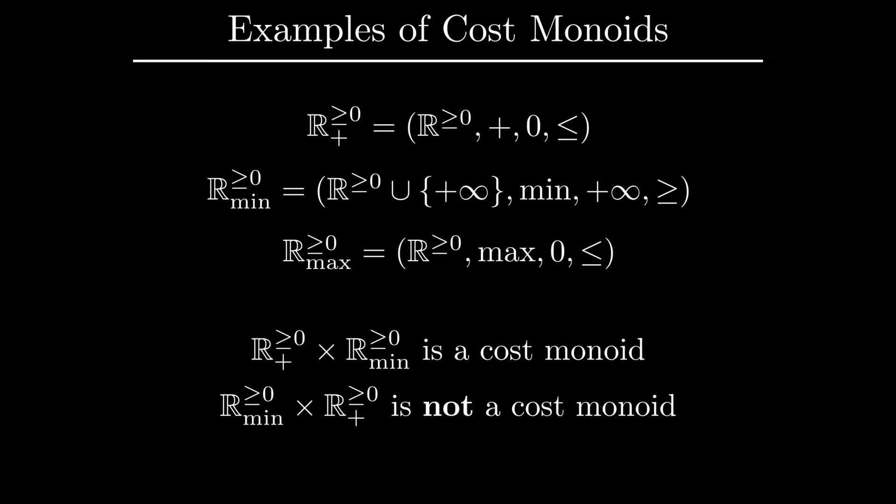Given two monoids, we can consider their Cartesian product, and if each monoid is endowed with a linear order, we can endow their product with a lexicographic order. It is important to note that Cartesian product of cost monoids may or may not be a cost monoid.